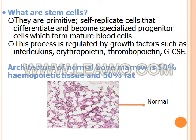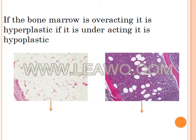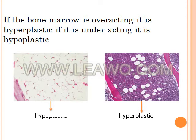The normal architecture of bone marrow is 50% hematopoietic tissue and 50% fat. Now, if the bone marrow is overacting, it is hyperplastic. If it is underacting, it is hypoplastic bone marrow.